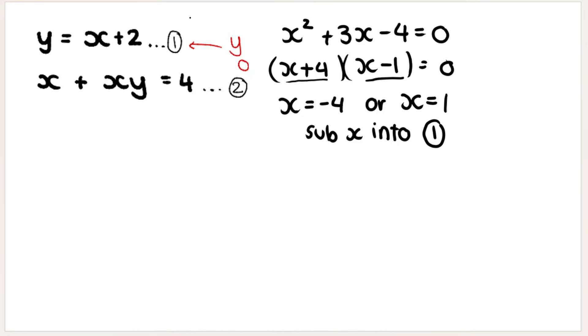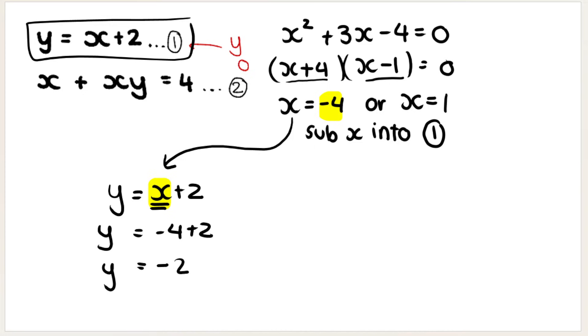So here's your first equation. So we're going to sub X into that equation. So in the place of X, we are going to put negative 4. So Y would then equal negative 2. So if my X is negative 4, my Y would be negative 2.